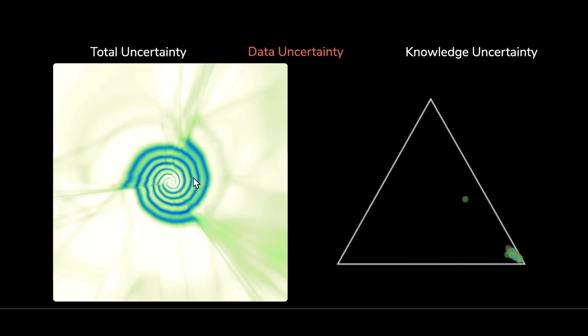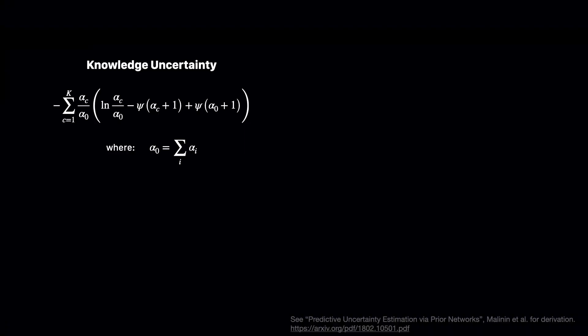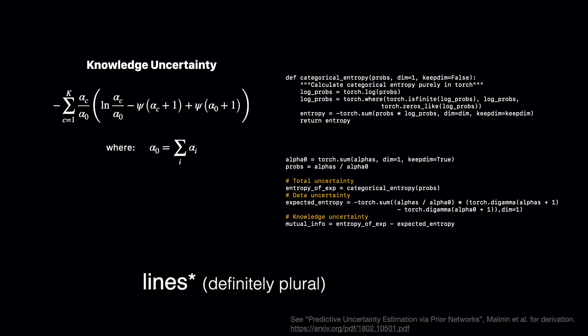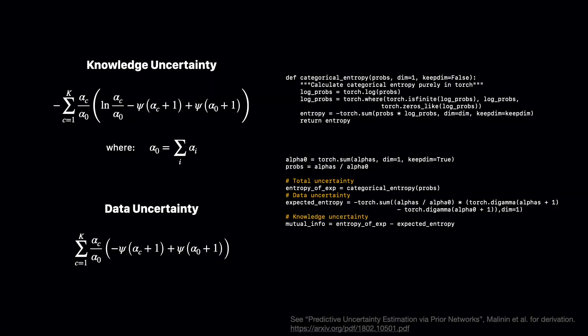We can compute a measure of spread or diversity of the output Dirichlet by computing the mutual information, using this analytical formula, which roughly translates to the following line of code in Python. Similarly, we can compute data uncertainty with this formula. The total uncertainty is then just the sum of the two. Note that we can compute these uncertainty measures with an analytical formula from a single pass through the neural network — we only have to evaluate one network once.